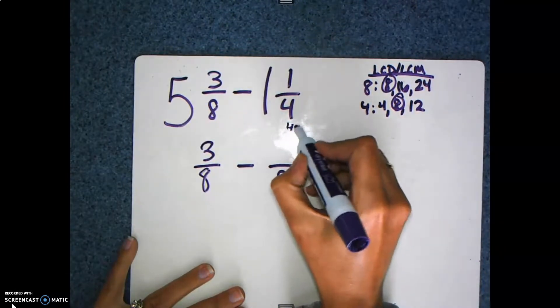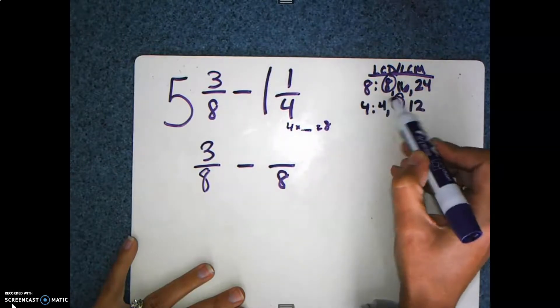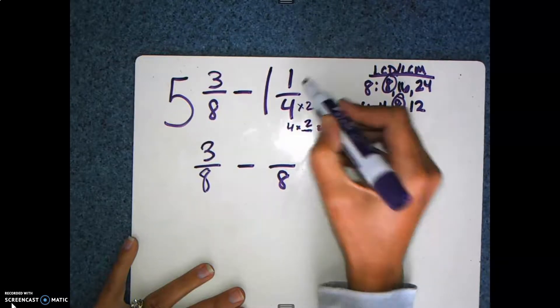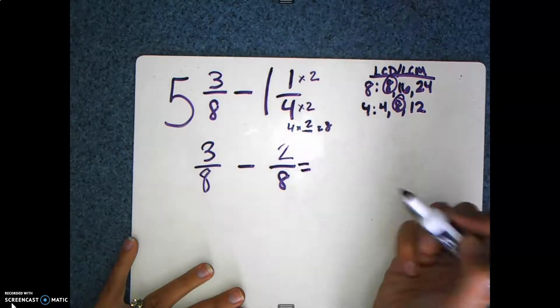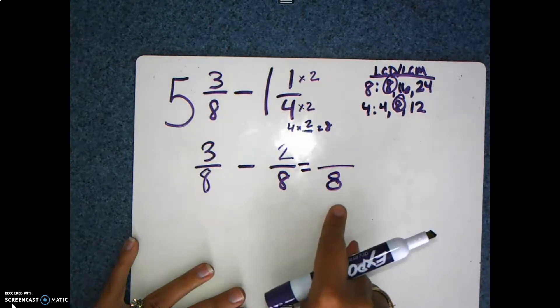Asking yourself, 4 times what will give me 8? 4 times 2. So 4 times 2 is 8. Whatever you do to the denominator, you do the numerator. 1 times 2 is 2. Now I can subtract because my denominators are the same. Bring your 8 straight across. 3 minus 2 gives us 1.